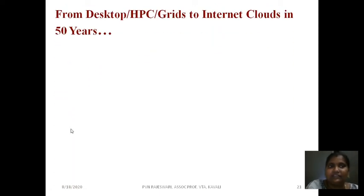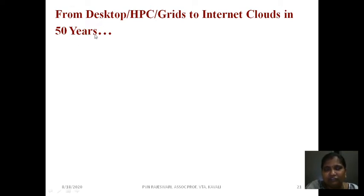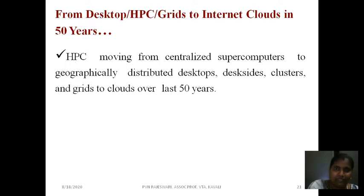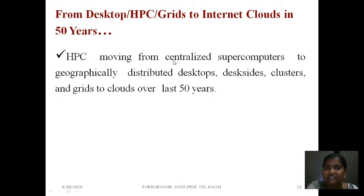The author wants to remind us again about the 50 to 60 years of evolution in computing technology — from desktop HPC and grids to internet clouds in 50 years. From HPC systems, which is high performance computing, we have two terms: HPC (high performance computing) and HTC (high throughput computing). HPC uses centralized supercomputers, while HTC uses distributed computing.